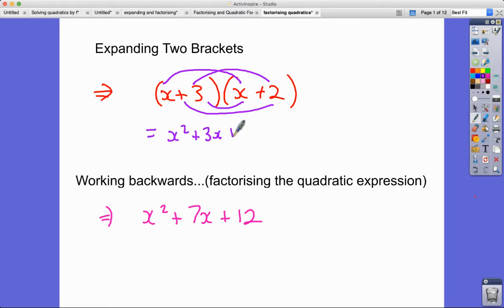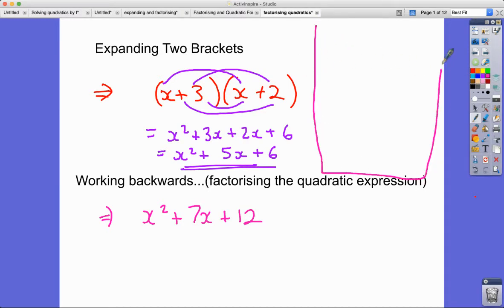3 times 2 is 6, and that simplifies to x squared plus 5x plus 6. Now if we're really observant here and really understand that process, then actually what's happening is that when you have x plus a multiplied by x plus b...